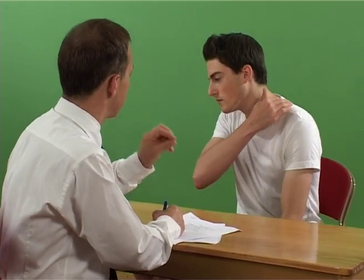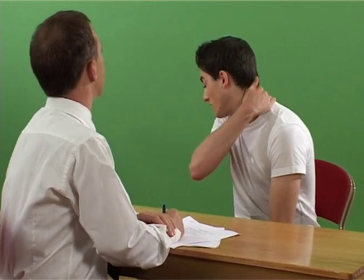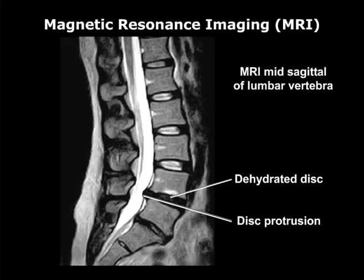When interviewing the patient, it is important to obtain specific details about the patient's pain. Characteristics such as type of pain and location should be noted. Lesions such as disc prolapses, annular tears, and ligament ruptures can be seen well.